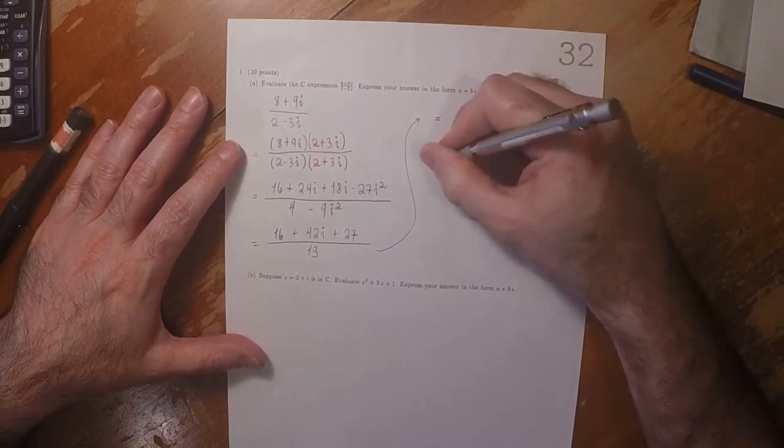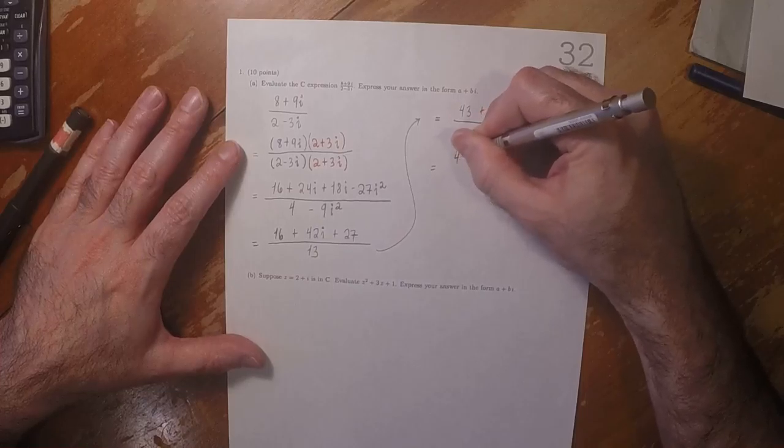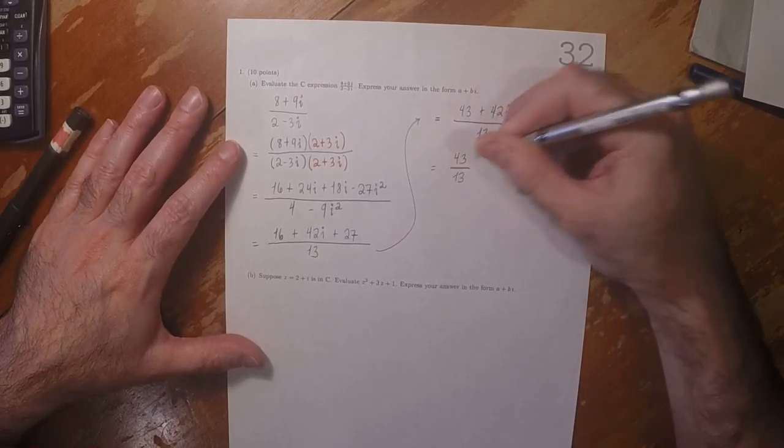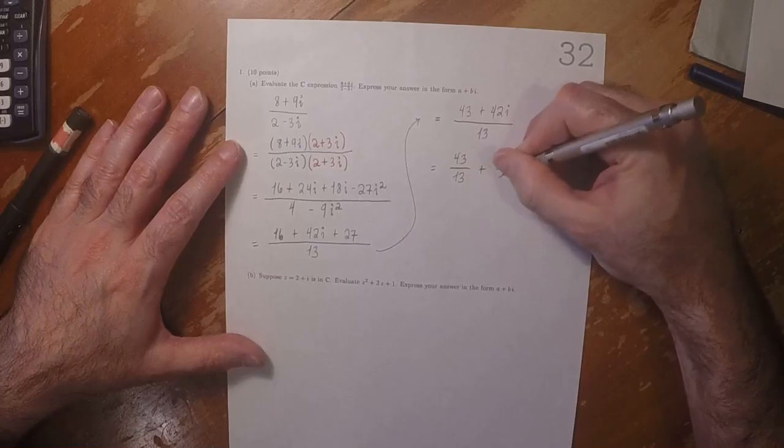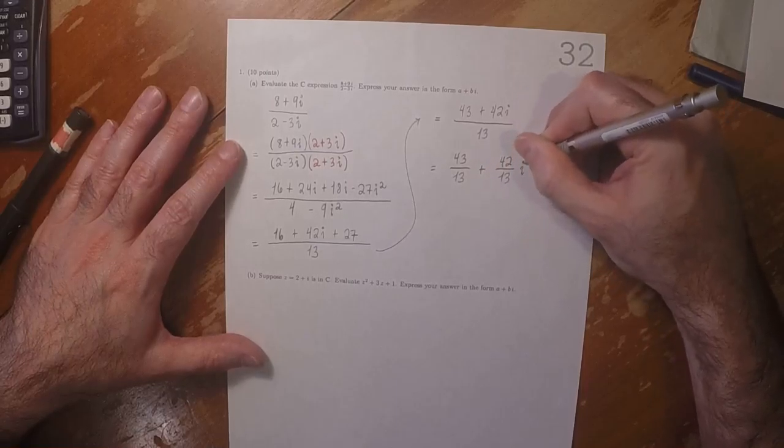So the answer is 43 over 13 is the real part, plus 42 over 13i.